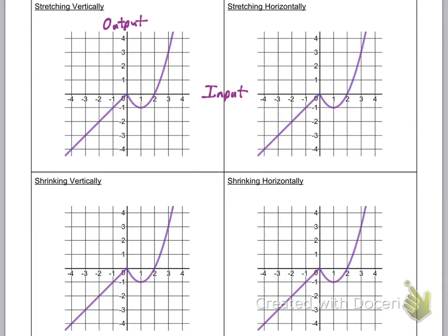Now let's look at stretching and shrinking. Vertically — that's up and down — is an output change, so we multiply or divide on the outside of the function. Stretching means getting bigger, which is correct — that's multiplication by a number bigger than one, like a times f of x. It's important for a to be bigger than one, because if a is less than one, like 0.5, that's like dividing by two — multiplying by a number smaller than one actually shrinks the value.